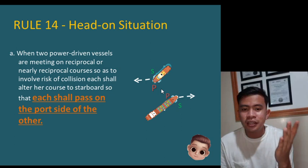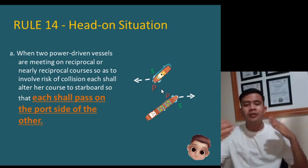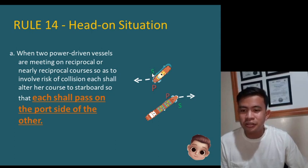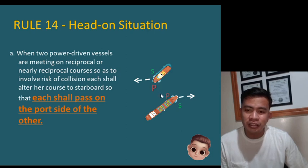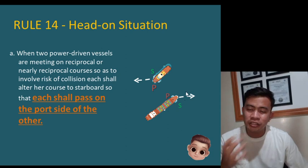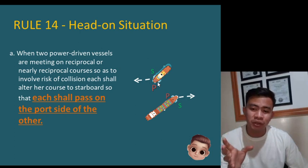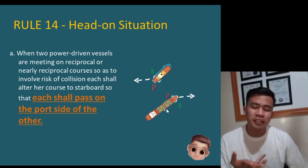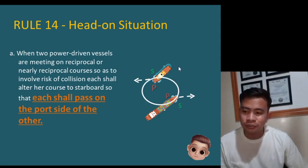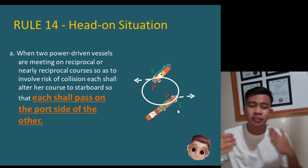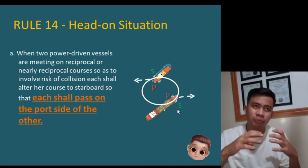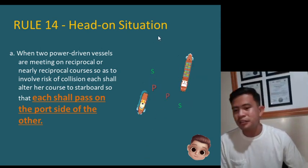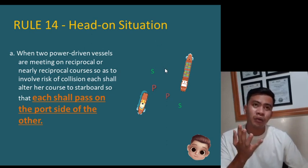This is what is called 'red to red' — port to port. When you alter course to the starboard side, your red lights become visible to each other, because on our navigational lights the green light is on the starboard side and the red light is on the port side. When both vessels alter course to starboard, the red lights are visible to each other — that is called port to port or red to red. That should be our automatic move whenever there is a head-on situation.